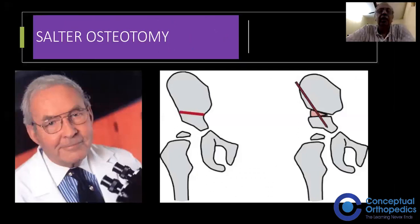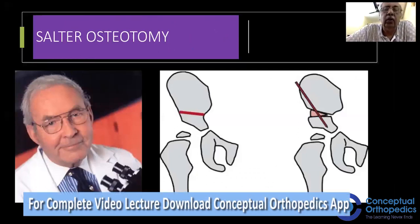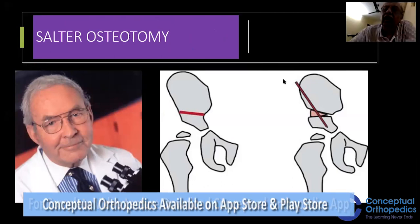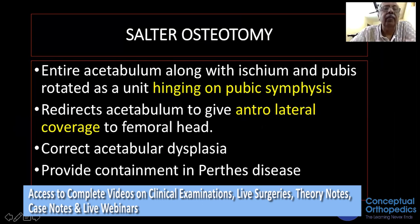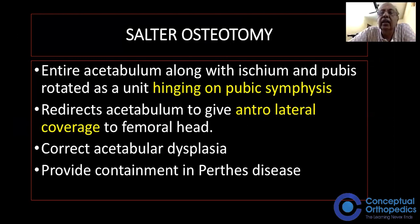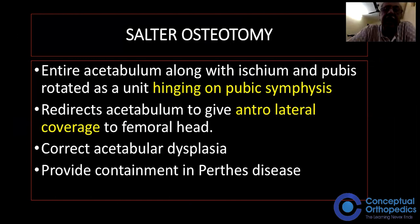The Salter Osteotomy was described by Bob Salter in Toronto. He cuts the acetabulum in line with the anterior inferior iliac spine to the sciatic notch and rotates it downwards, forwards, and laterally. The entire acetabulum along with the ischium and pubis are rotated as a unit, hinging on the pubic symphysis. So the hinge is the pubic symphysis, and it redirects the acetabulum to give anterolateral coverage of the femoral head.